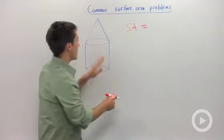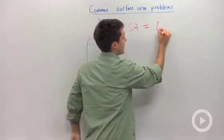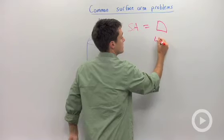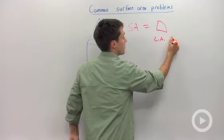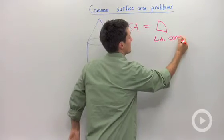We're going to start off with the lateral area of this cone, which I'm going to draw as a sector, since that's what it looks like if you unfold it. So we're going to say lateral area of the cone.